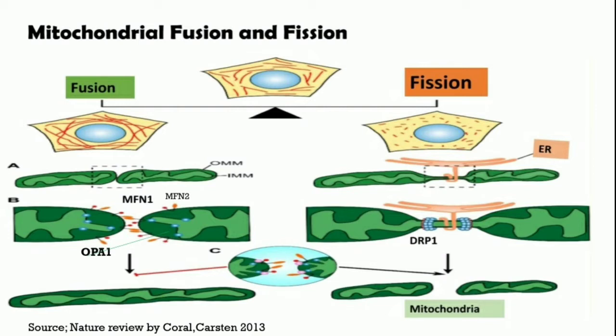Fusion and fission are the key events regulating mitochondrial morphology that need to be balanced to support normal mitochondrial function and prevent disease. In mammalian cells, the fusion of mitochondria is regulated by two mitofusins, MFN1 and MFN2, which are located on the outer mitochondrial membrane, and OPA1, optic atrophy protein 1, which is located in the inner mitochondrial membrane.